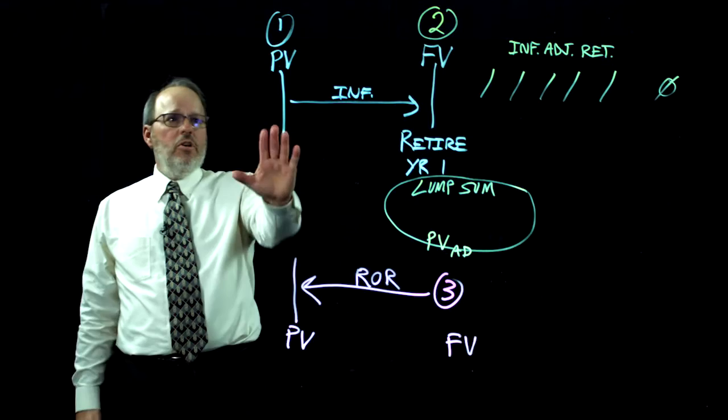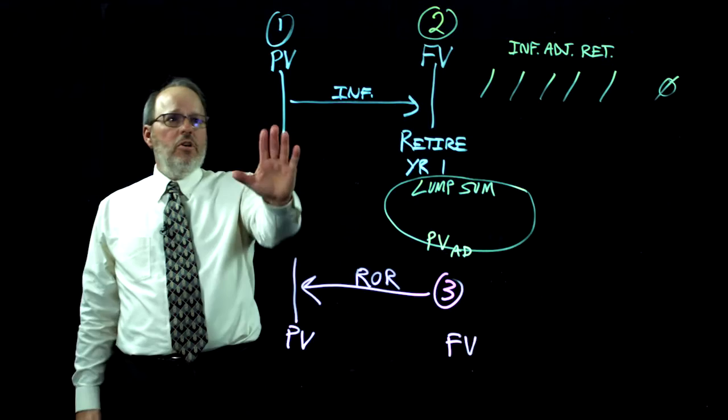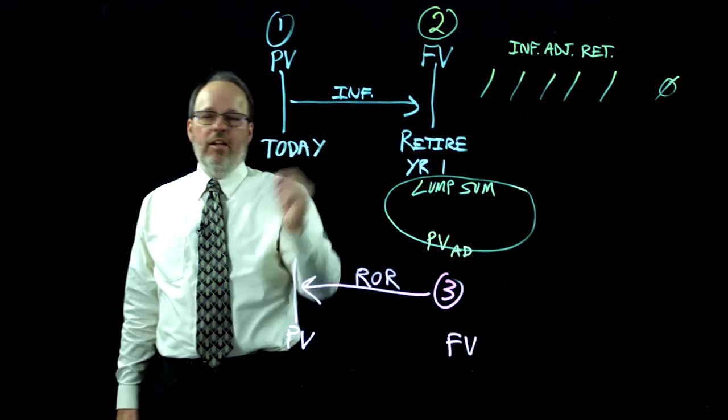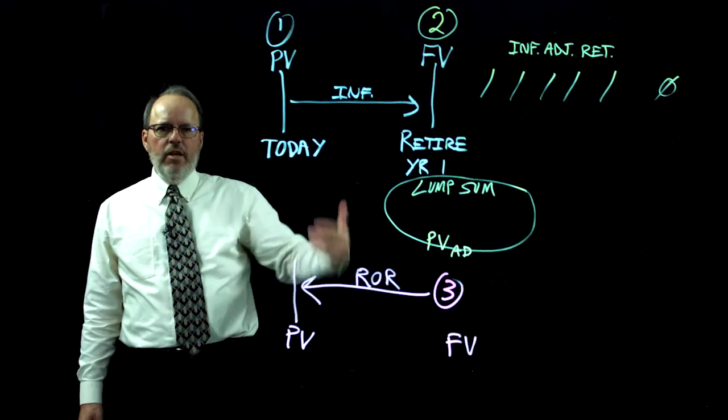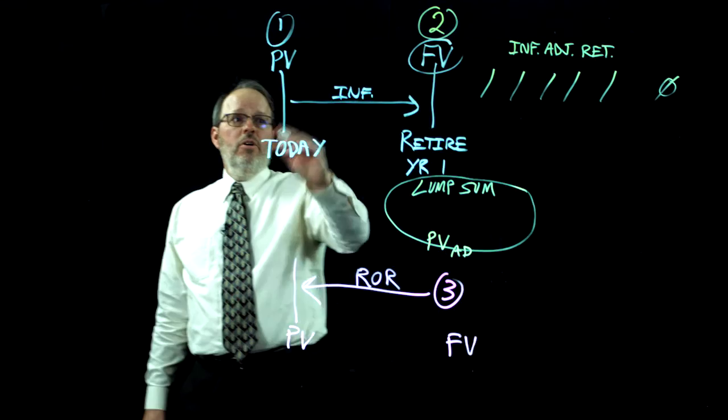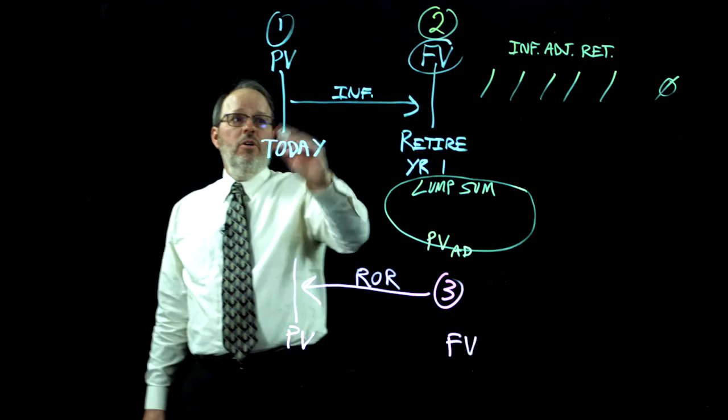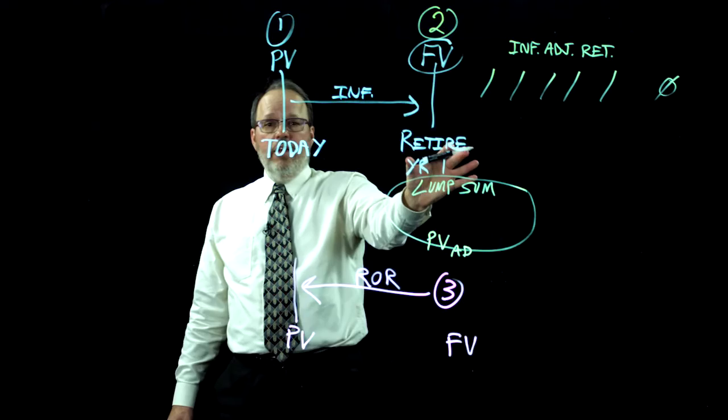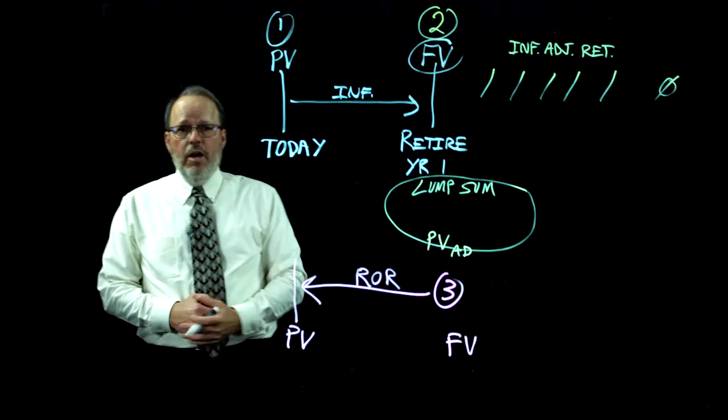Step one starts with today's dollars. You figure out what you need in today's dollars to live on, maintaining buying power when you retire. So the first step is a simple future value calculation: take a dollar amount in today's dollars over a certain number of years, apply the inflation rate, solve for future value, and come up with what the dollar amount would be in year one of retirement to maintain buying power.